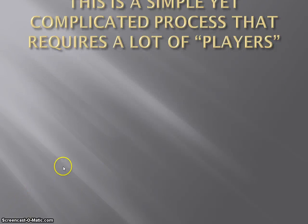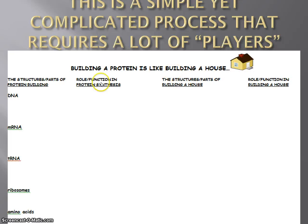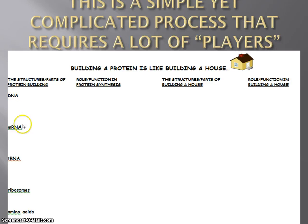What we want to focus on here is that this is going to be a pretty complicated process to go from a code to an actual protein. It's going to require a lot of players. What we're going to do throughout this process is use — to borrow a phrase from English teachers — a simile: that building a protein is just like building a house. We're going to take each one of our individual molecules and components and players, if you will, and compare that to a certain person, place, or structure in building a house.